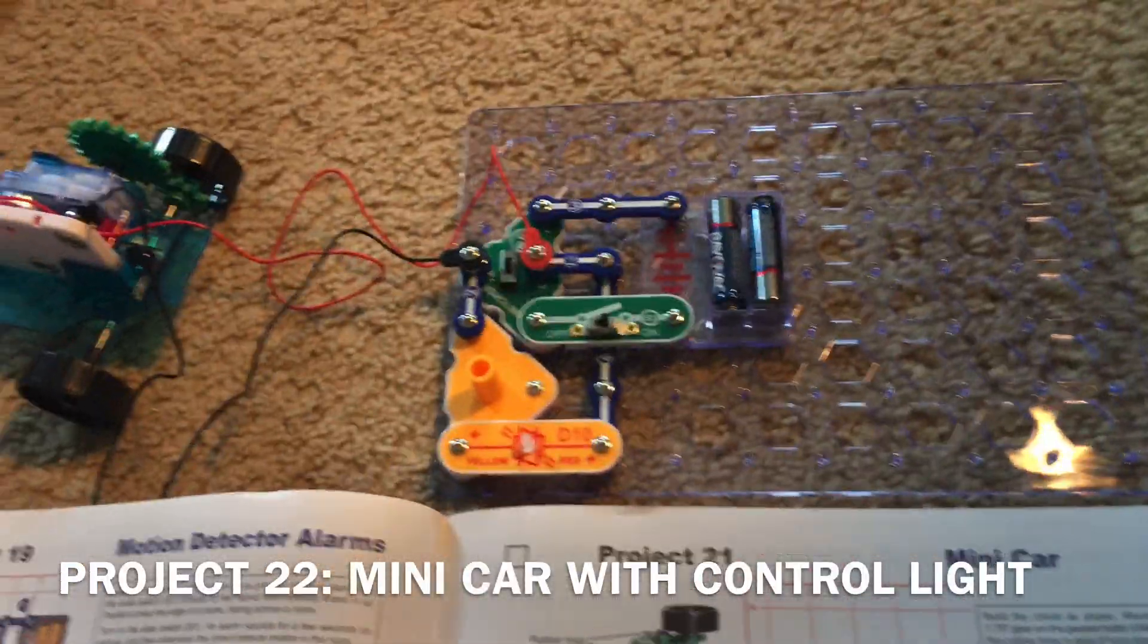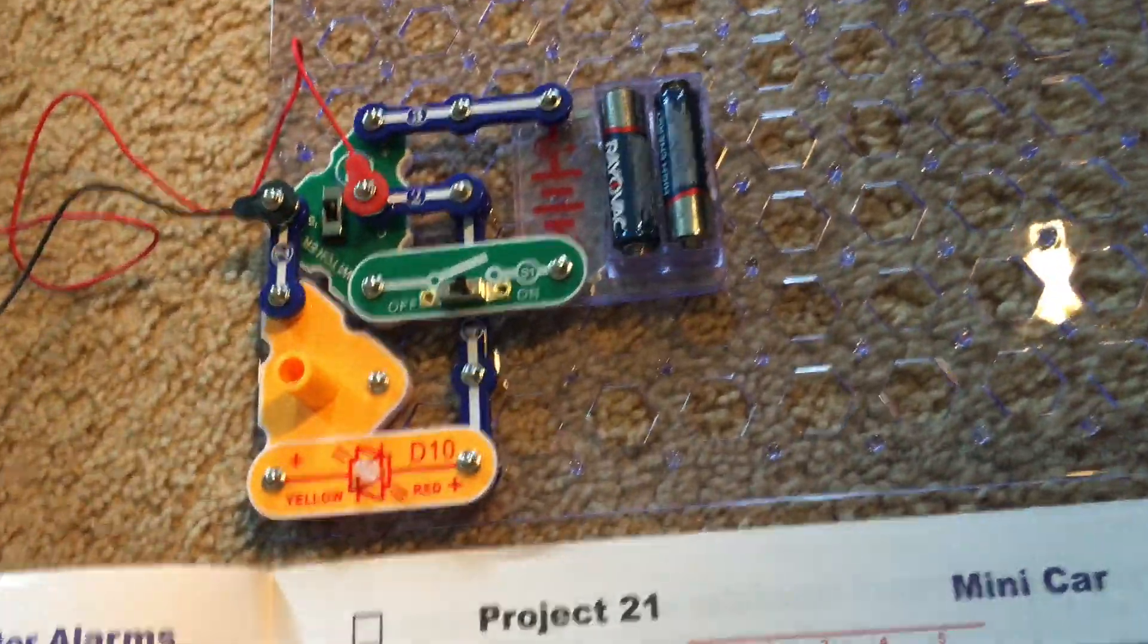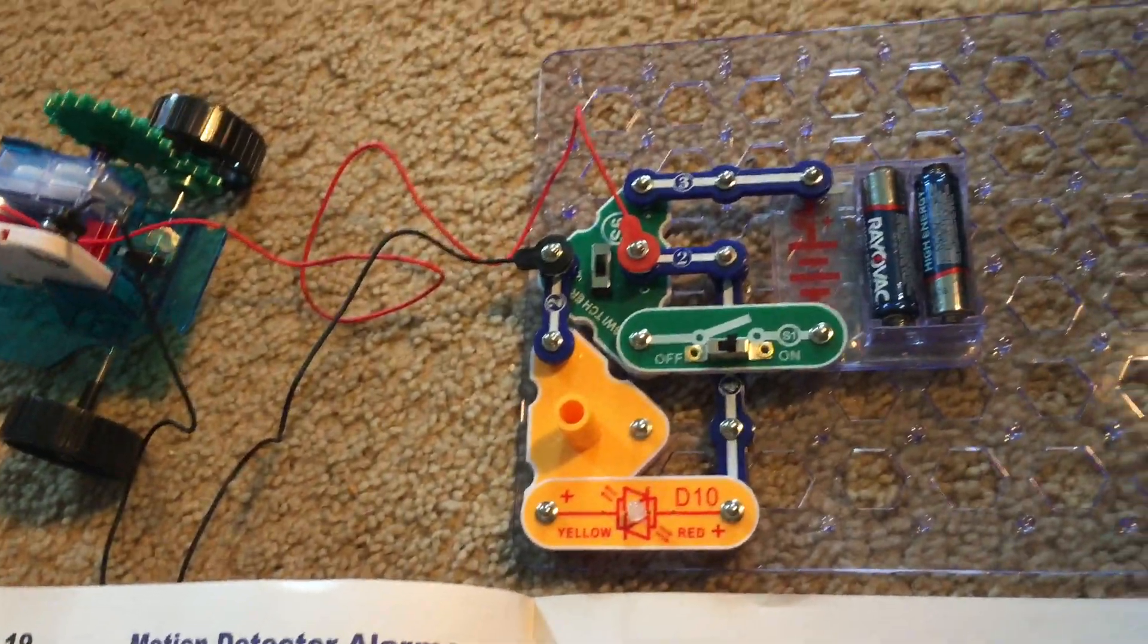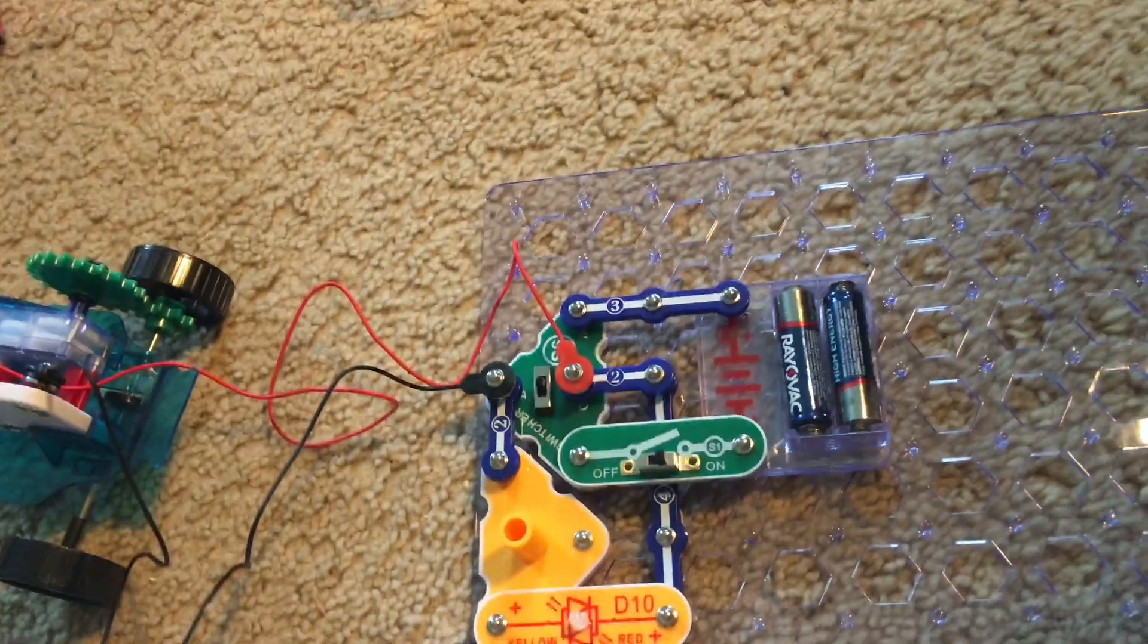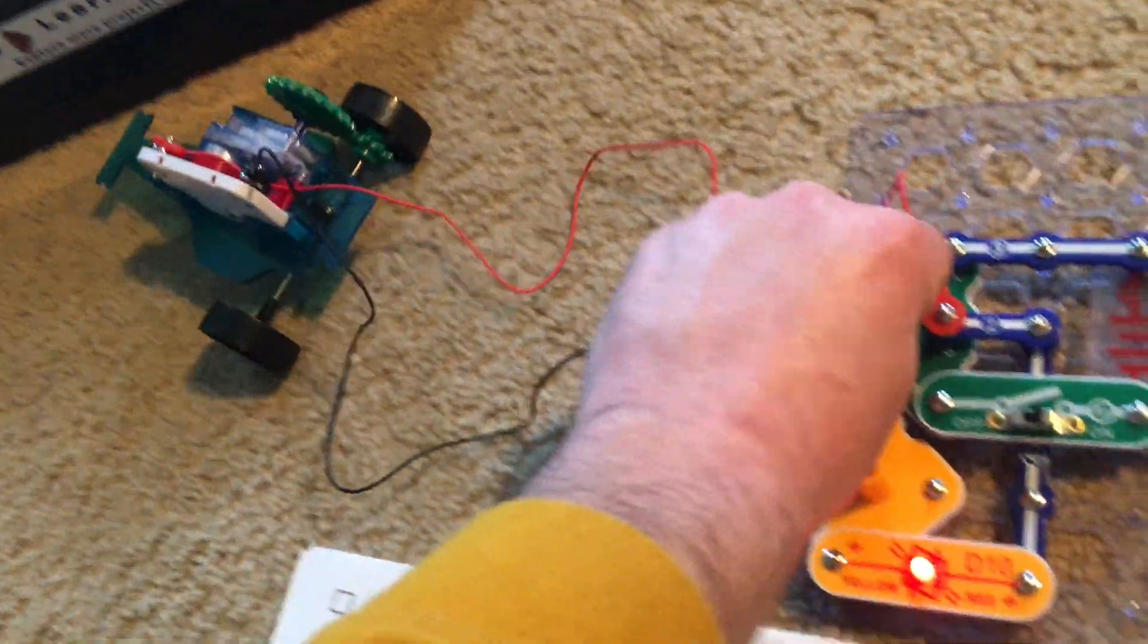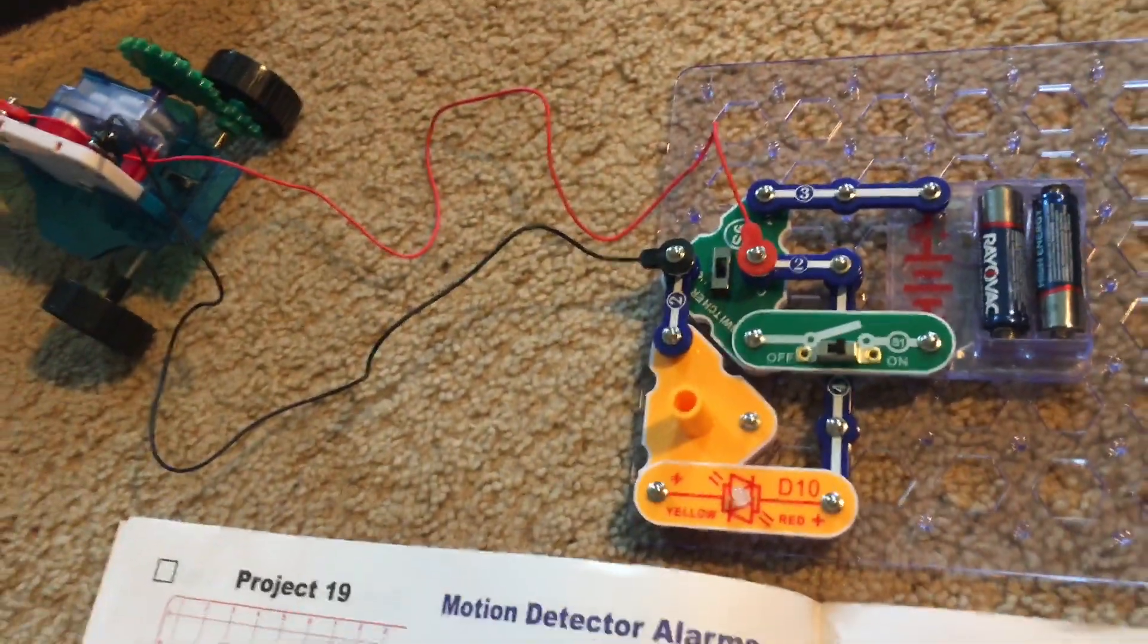I modified the control circuit and added the bicolor LED. Now, look what happens when I make the car go forward. The control light comes on and the bicolor LED comes on and it is yellow.